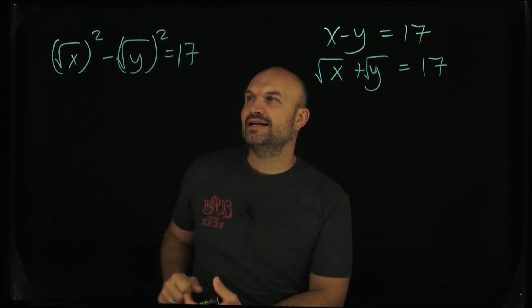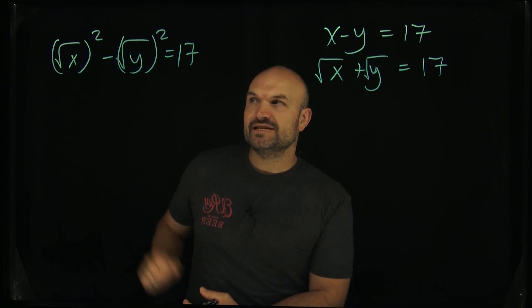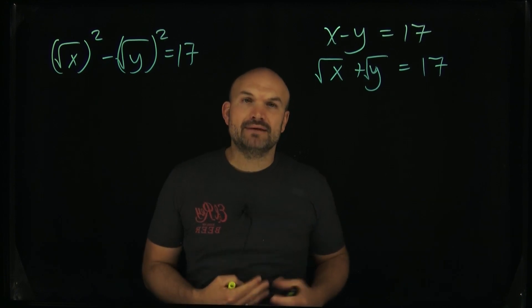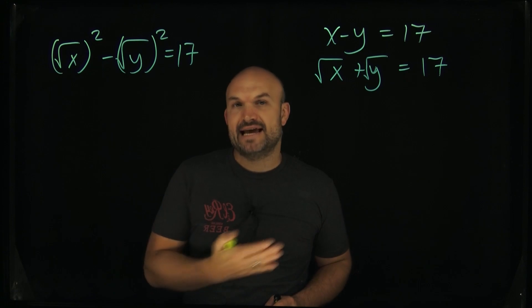Now why would I do that? The reason is I created something squared minus something else squared, and that's really important because we can apply the difference of two squares: a² - b² is (a - b)(a + b).